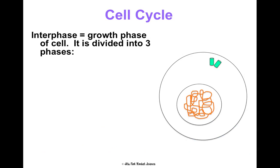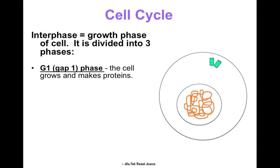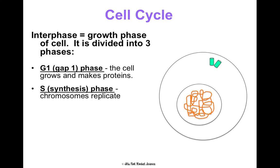Interphase is the growth phase of the cell, and it itself is subdivided into three phases: G1, S, and G2. In G1 or Gap 1 phase, the cell is just growing and making proteins, because proteins run our cells — it's making things that will help the cell divide. The S phase, or synthesis phase, is so critical — this is when your chromosomes double. They replicate themselves so you have two copies of every chromosome.